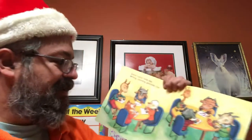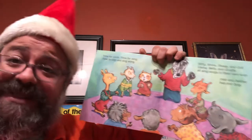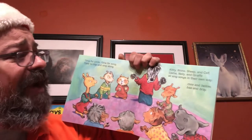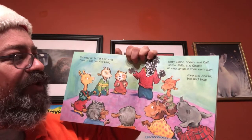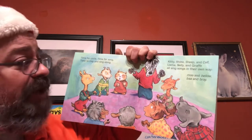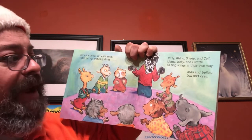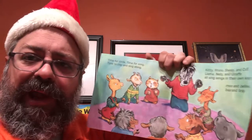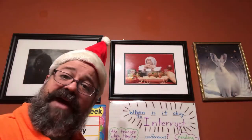'Roll the pancake, draw the sun — almost everyone has fun.' This is the beginning of the story, so in my beginning-middle-end box chart I want to write something like: the kids were playing together, having fun in the classroom. 'Time for circle, time for song — time to clap and sing along. Kitty, rhino, sheep, and calf — llama, nelly, and giraffe — all sing songs on their way. Moo and bellow, bah and bray.'